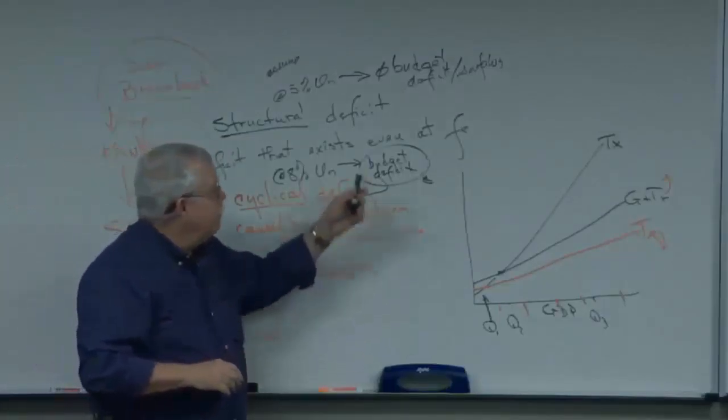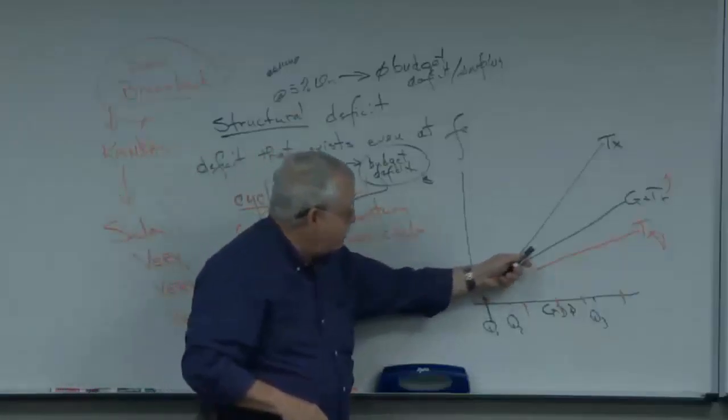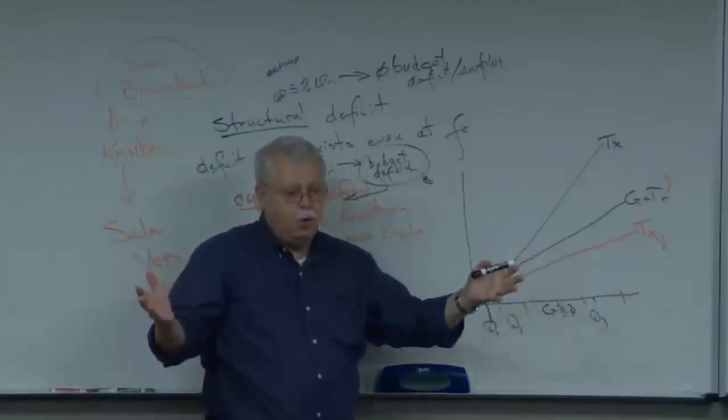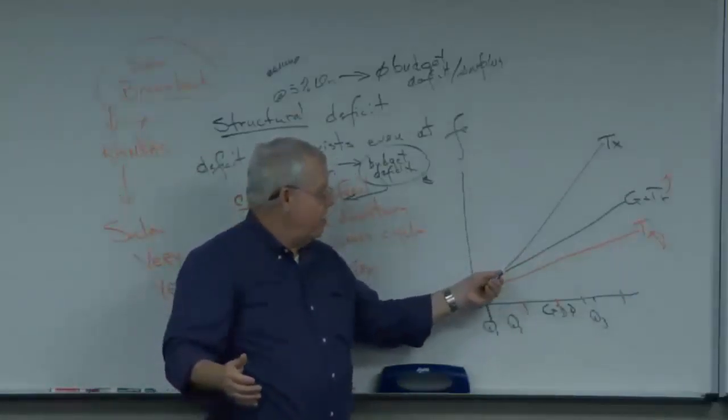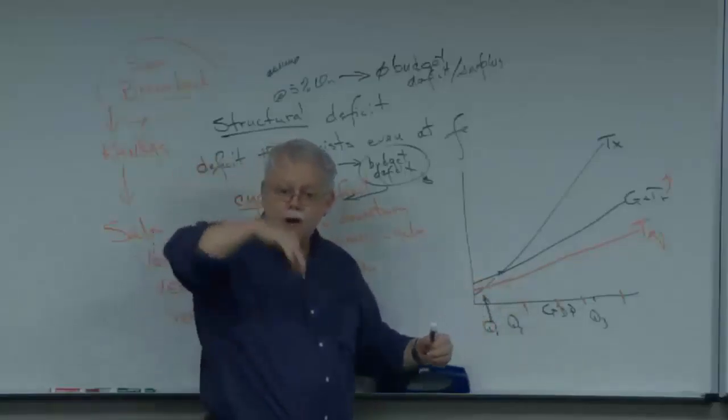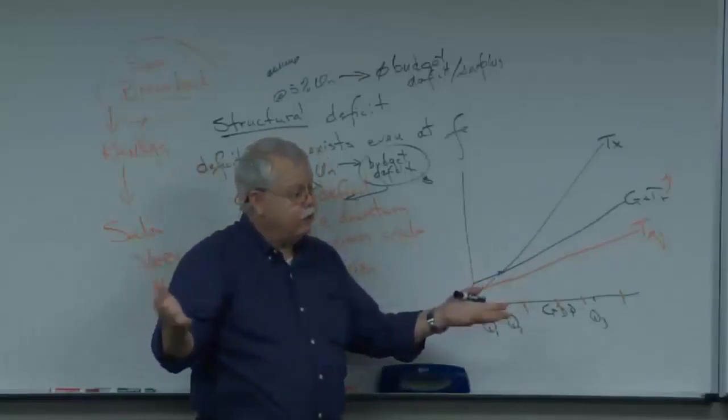Now, if you don't have a structural deficit, so you have the two black lines here, you're pretty cool. That doesn't mean you're going to always have a balanced budget, because when the economy cycles down, you're going to see yourself with a deficit.